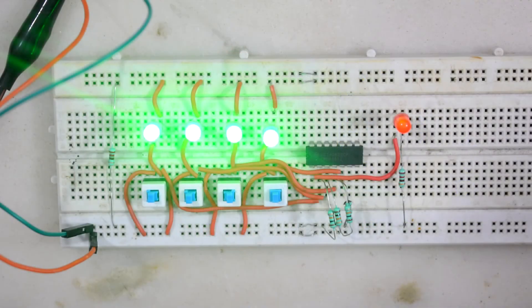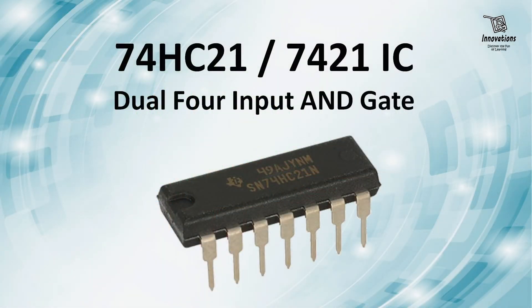In my previous video, I showed a 4-input AND gate with CD4082 IC. In today's video, I'm going to show another 4-input AND gate, the 7421 IC. Whether it's 74HC21 or 74LS21, it's the 7421 IC. This is also a dual 4-input AND gate, meaning there are two AND gates with 4 inputs each.